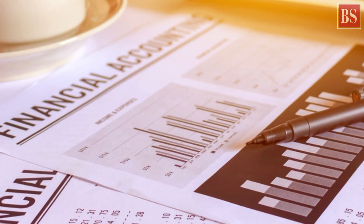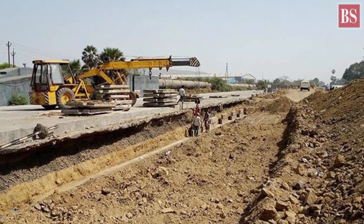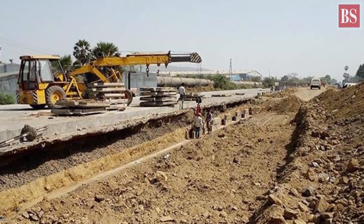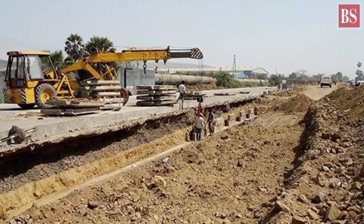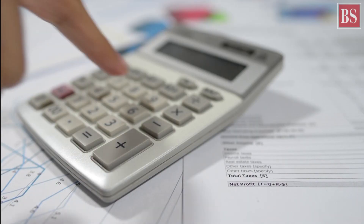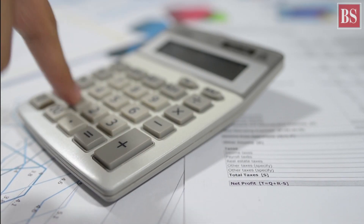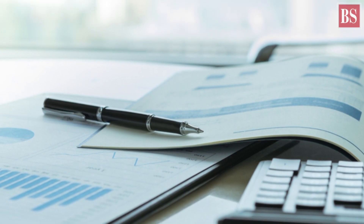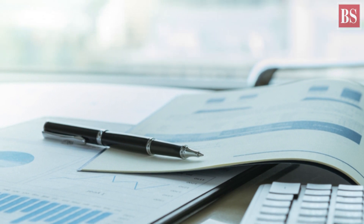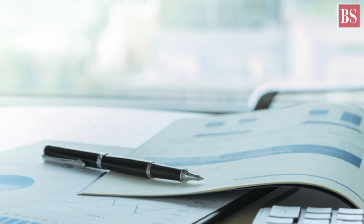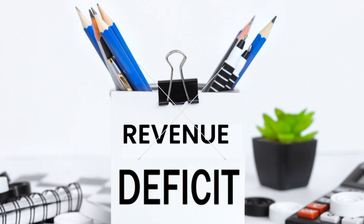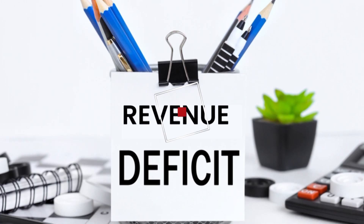Finally, the government spends more than it earns, because of which the difference between revenue receipts and revenue expenditure is usually negative. This difference is called the revenue deficit.